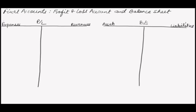Now there is a convention of writing liabilities on a particular side and assets on the other, but we have to keep in mind that this is a convention, not a rule. So we can keep assets on either the left side or the right side — it doesn't matter actually.